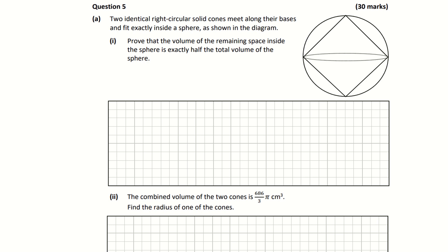Starting off on part A, two identical right circular solid cones meet along their bases and fit exactly into a sphere as shown in the diagram. Prove that the volume of the remaining space inside the sphere is exactly half the total volume of the sphere. Basically what you're looking at here is your formula for a cylinder and your formula for a cone.